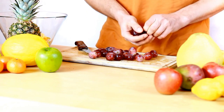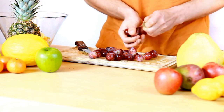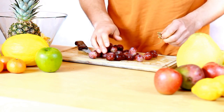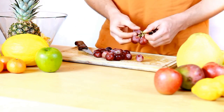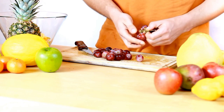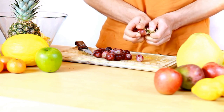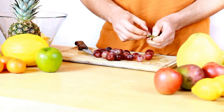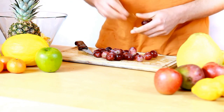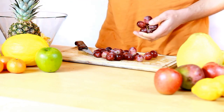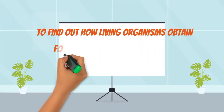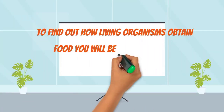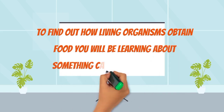Many kinds of relationship exist between living organisms. And no, not the in love kinds of relationships. However, these relationships may be beneficial or harmful to the organism. To find out how living organisms obtain food, you will be learning about something called the food chain.